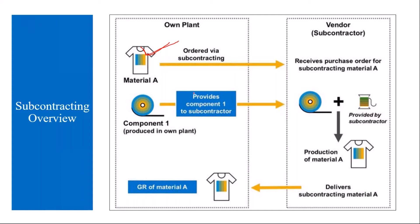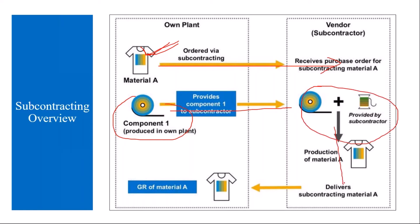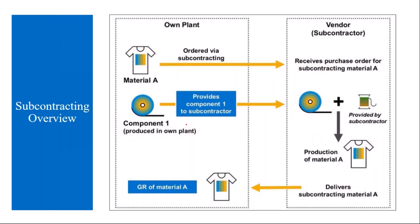For example, you need a shirt. You place an order for the shirt, and whatever materials are required to manufacture the shirt you provide to him. Then using those materials he manufactures the shirt, delivers it to us, and we receive it. The extra step here is that you provide the materials to him.